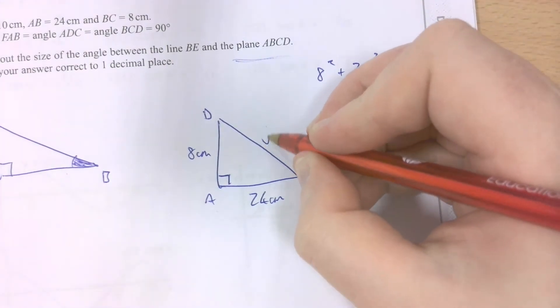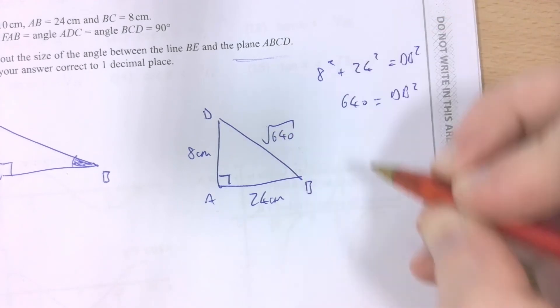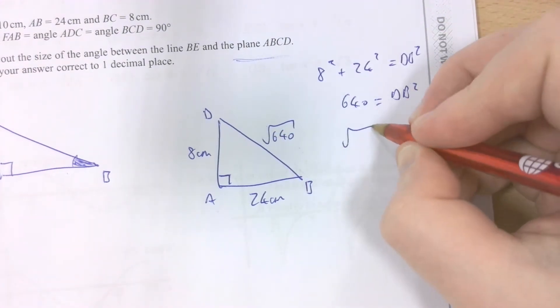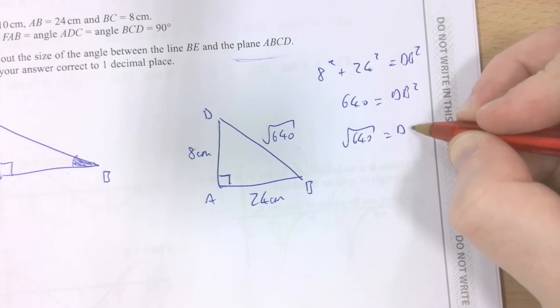DB is going to be the square root of 640. Square rooting both sides to work out the length of DB.